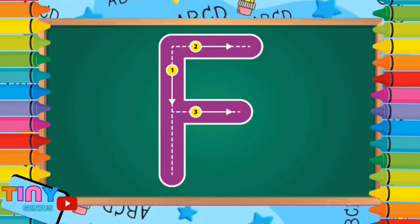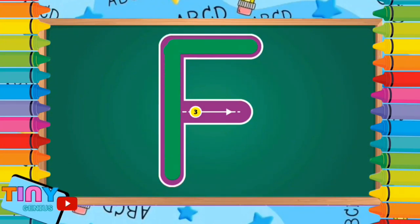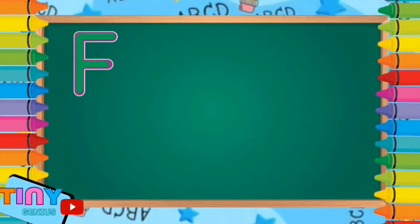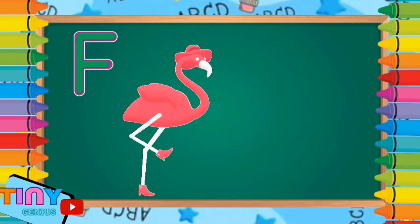Letter F. Pull down. Across at the top, across at the middle. F is for flamingo.